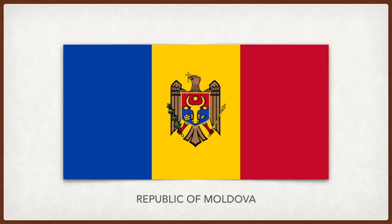Moldova: the olive branch symbolizes peace. The blue and red shield on the eagle's chest has traditional symbols of Moldova — the aurochs head flanked by a rose and crescent, and a star between its horns.